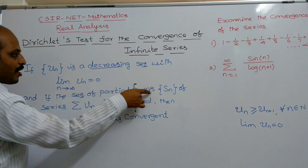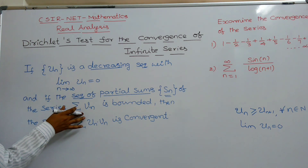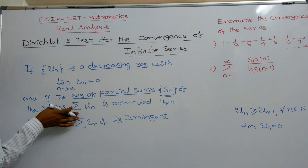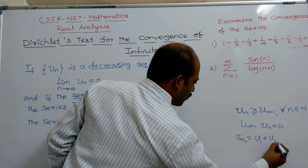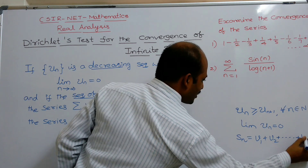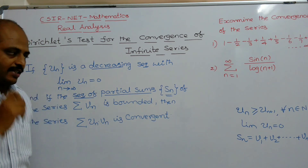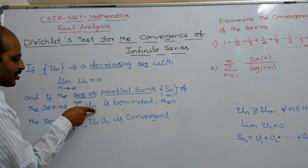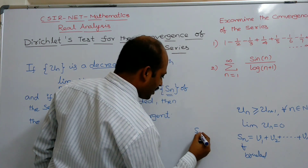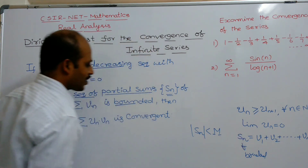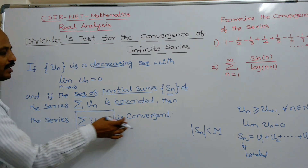And if the sequence of partial sums SN of the series summation VN — where SN equals the nth partial sum, that is V1 plus V2 plus ... plus VN — is bounded, meaning the modulus of SN is less than some positive constant M, then the product series summation UN times VN is convergent.